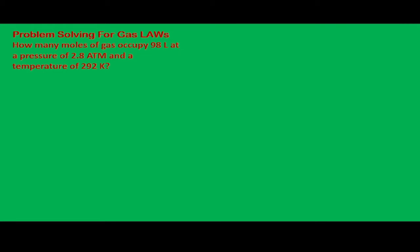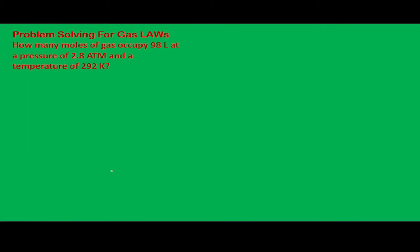Hello and welcome to this video. Today we're going to solve some problems about gas laws. The first one: how many moles of gas occupy 98 liters at a pressure of 2.8 atm and a temperature of 292 Kelvin? You can try to draw the situation — imagine a container with a volume of 98 liters, containing an amount of air with molecules. We are going to look for the number of moles, N.